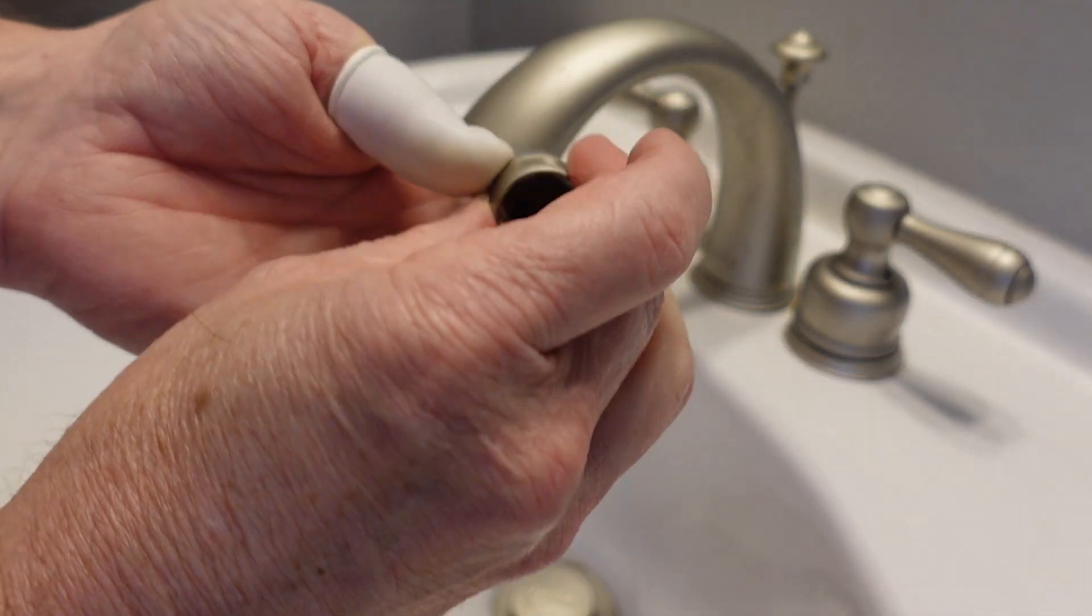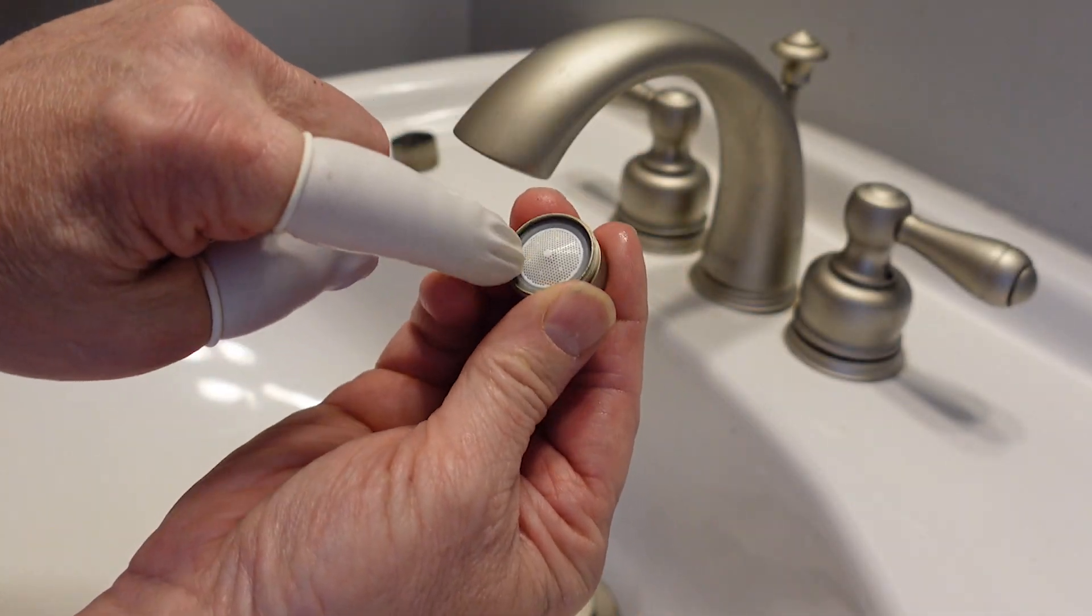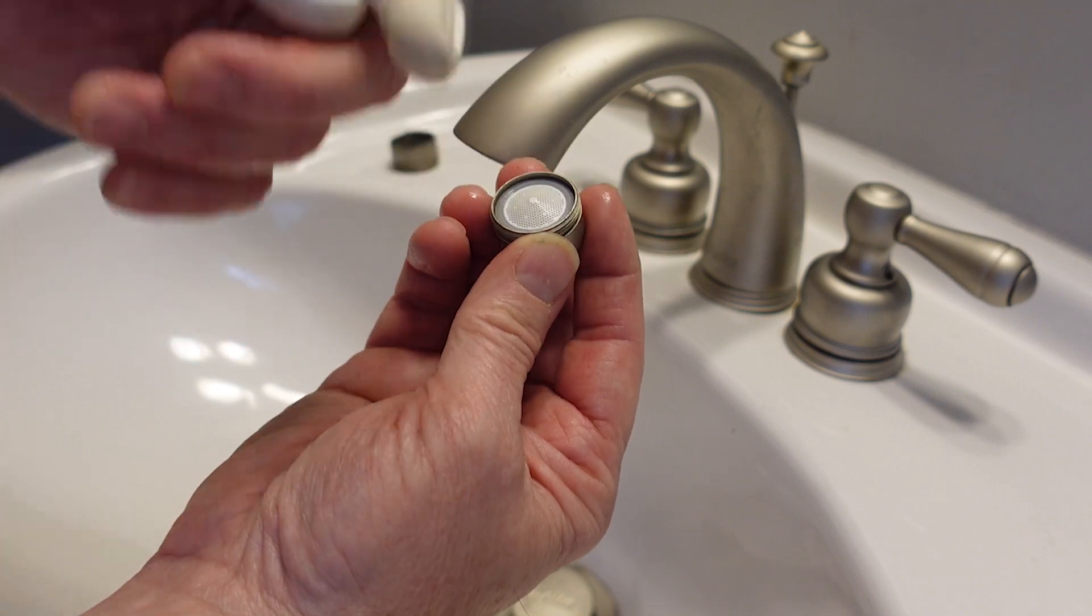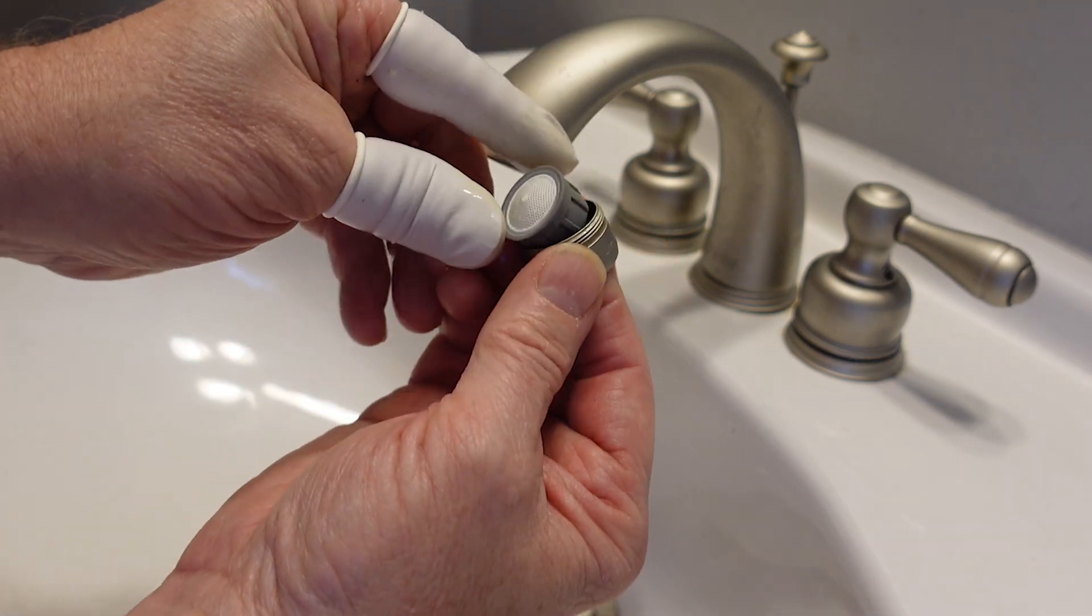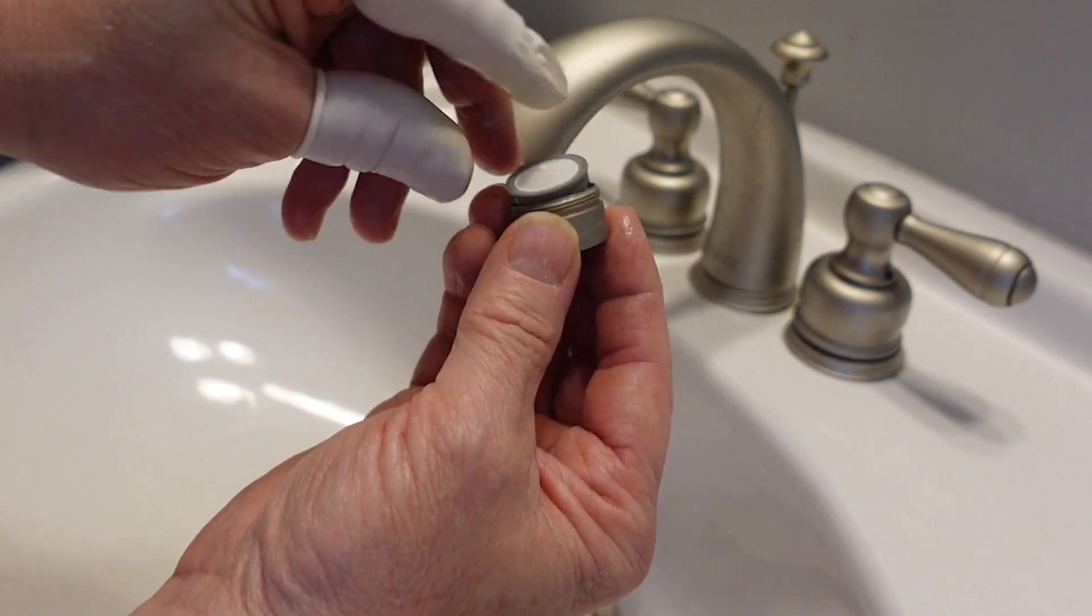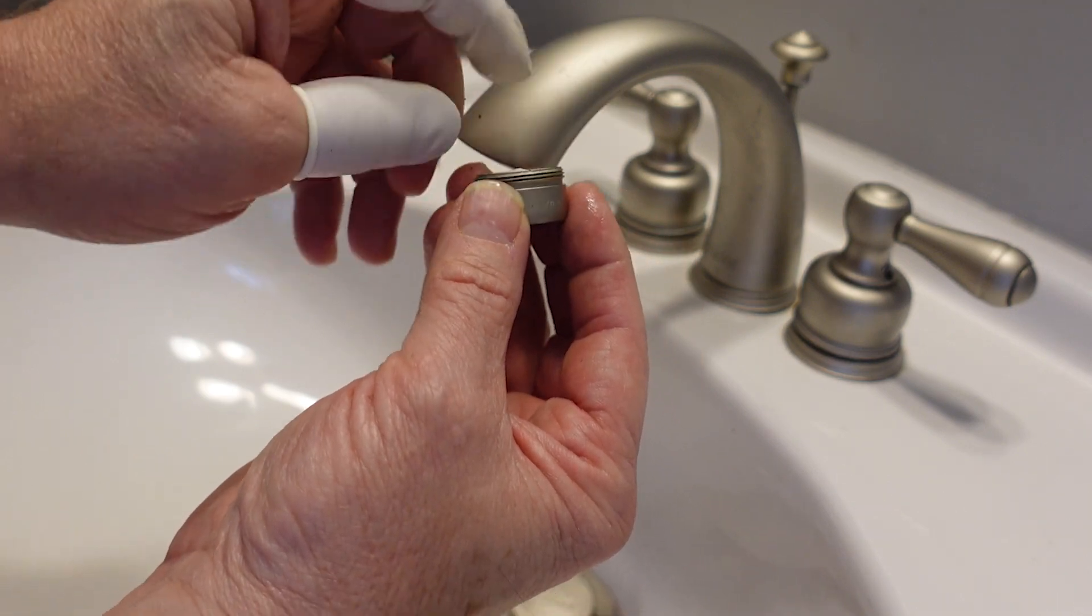It comes in two different pieces. You just push it down in there, the white part. This actually is an indicator of what the flow rate on the nozzle is. I'll post down below where you can get a bunch of these with different nozzles. This one is supposedly two gallons per minute, which seems like a lot.